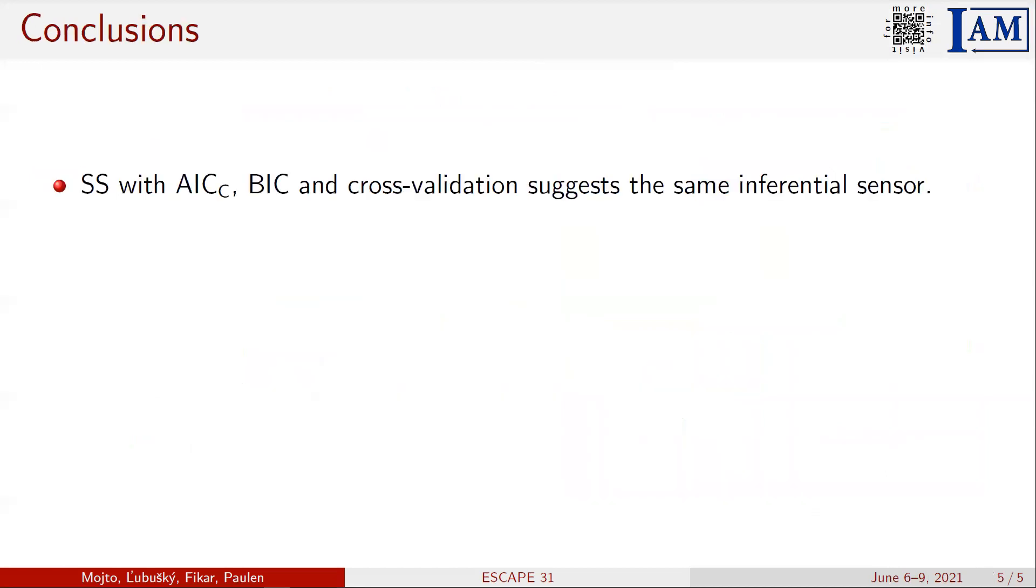At last, let me quickly summarize the main findings and observations from this work. The subset selection with corrected AIC, BIC, and cross-validation determine the same inferential sensor.